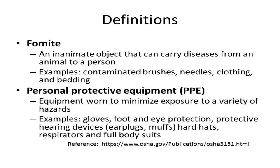A fomite is an inanimate object that can carry pathogenic agents from an animal to a person. Examples of fomites include contaminated brushes, needles, clothing, and bedding like straws or shavings. Fomites contaminated with a disease agent can transmit disease through direct contact with a person.